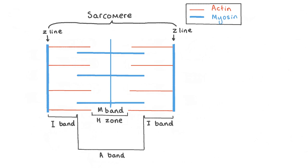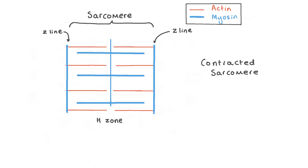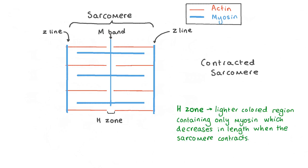Now that we know a bit more about the structure of the sarcomere, let's see what happens when it contracts. In the contracted sarcomere, the distance between the two Z lines decreases so the length of the sarcomere also decreases. This is because the actin filaments have been pulled by the myosin filaments closer towards the M line in the middle of the sarcomere, which also means that the length of the H zone, which only contains myosin, decreases. The decreasing length of the H zone is what causes the whole sarcomere to shorten. Let's see how much we've learned about the structure of muscles by having a go at a couple of practice questions.